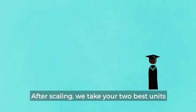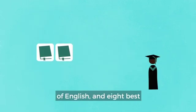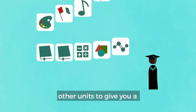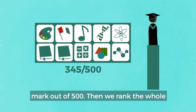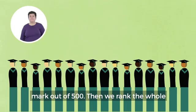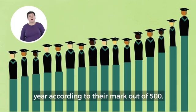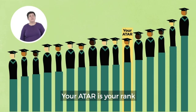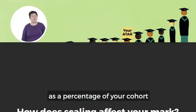After scaling, we take your two best units of English and eight best other units to give you a mark out of 500. Then we rank the whole year according to their mark out of 500. Your ATAR is your rank as a percentage of your cohort.